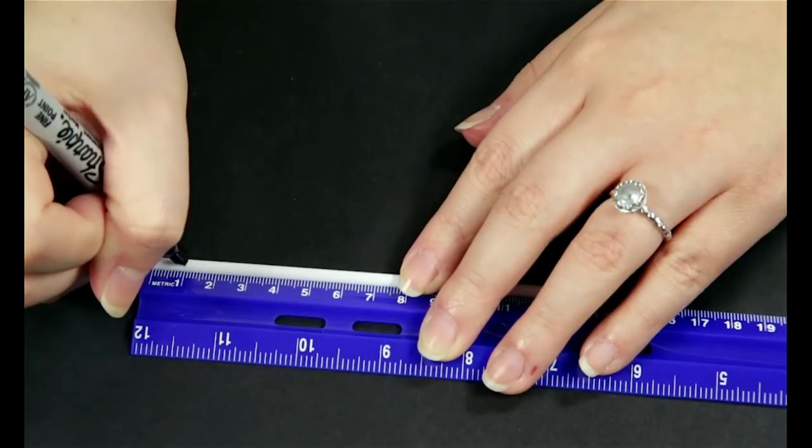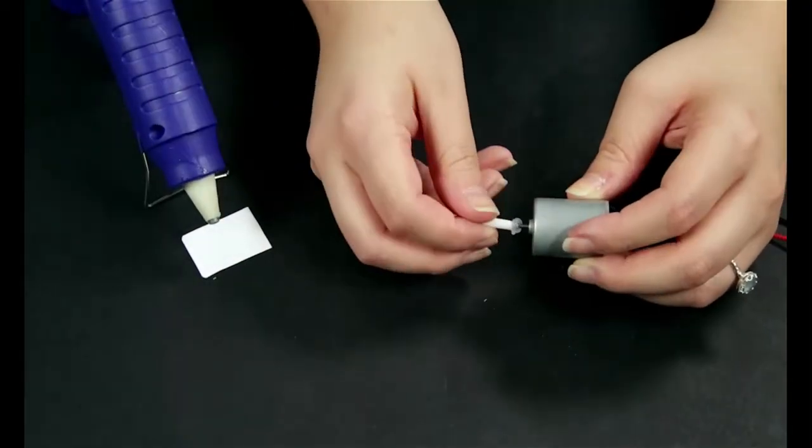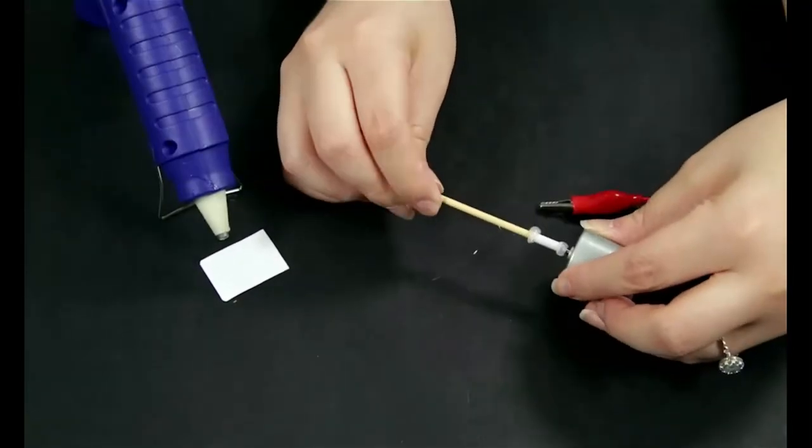Cut a small section of the milk straw. Use the section of milk straw to attach the skewer to the spindle of the motor.